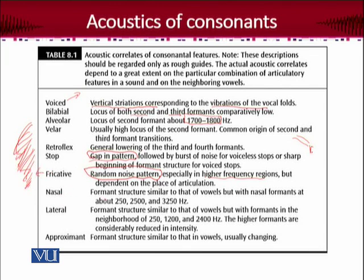For nasals, since they carry a structure similar to vowels, nasals would have formants where F1 would be around 250 Hz, F2 would be quite high at around 2500 Hz, and F3 would be around 3250 Hz. For laterals, the formant structure is also similar to that of a vowel, but with F1 in the neighborhood of 250 Hz. You can detect the difference between nasal and lateral in F2: for nasal it is 2500 Hz, and for lateral it is 1200 Hz.